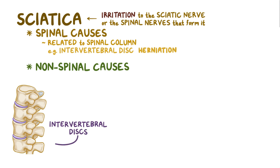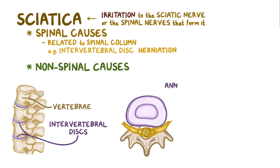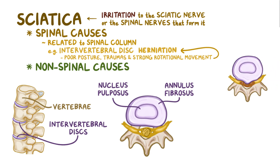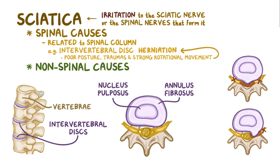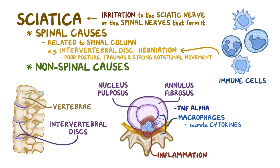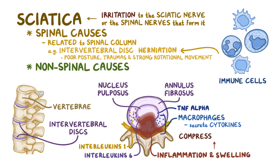The intervertebral discs lie between vertebrae and act as shock absorbers. Each disc is made of two parts: the outer fibrous ring called the annulus fibrosus, and the inner gel-like pulp called the nucleus pulposus. Poor posture, traumas, physical activity, and strong rotational movement can cause herniation where the disc bulges out in one direction — toward the center of the spinal cord, compressing multiple nerve roots on both sides, or laterally, compressing one nerve root on one side. In some cases, macrophages attack the nucleus pulposus and start secreting inflammatory cytokines like tumor necrosis factor alpha, interleukin-1, and interleukin-6. The inflammation and swelling which result from this reaction compress the nerves even further.